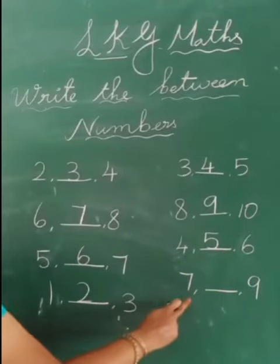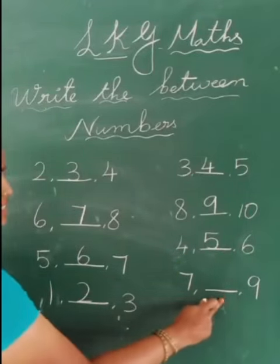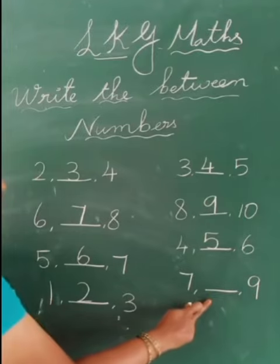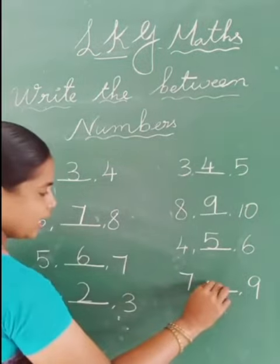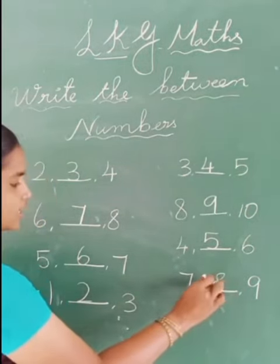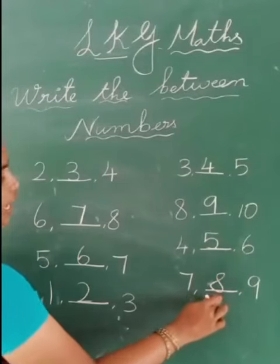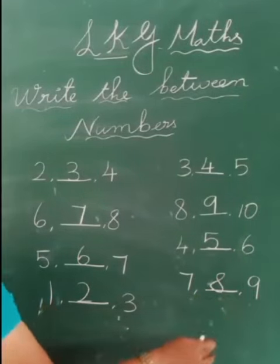Next one, 7 dash 9. What will come here? Yes, 7, 8, 9. What will come here? Yes, very good. You want to write up 8. 7, 8, 9. Okay, tonight. You want to understand how to write the between numbers.